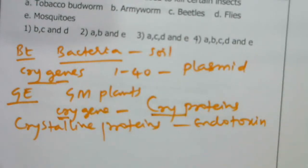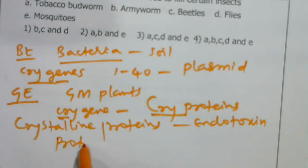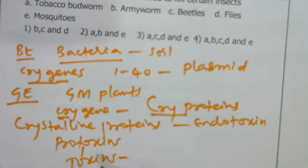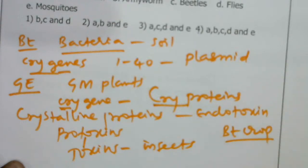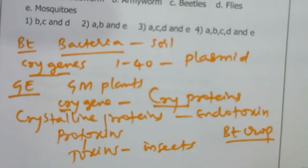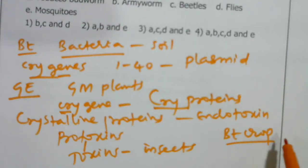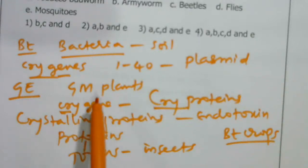These crystalline proteins are produced as inactive protoxins. They are converted into active toxins inside insects. Bt crops — whether Bt cotton, Bt brinjal, Bt tomato, Bt rice, Bt maize — all contain specific cry genes that are effective against particular insects.